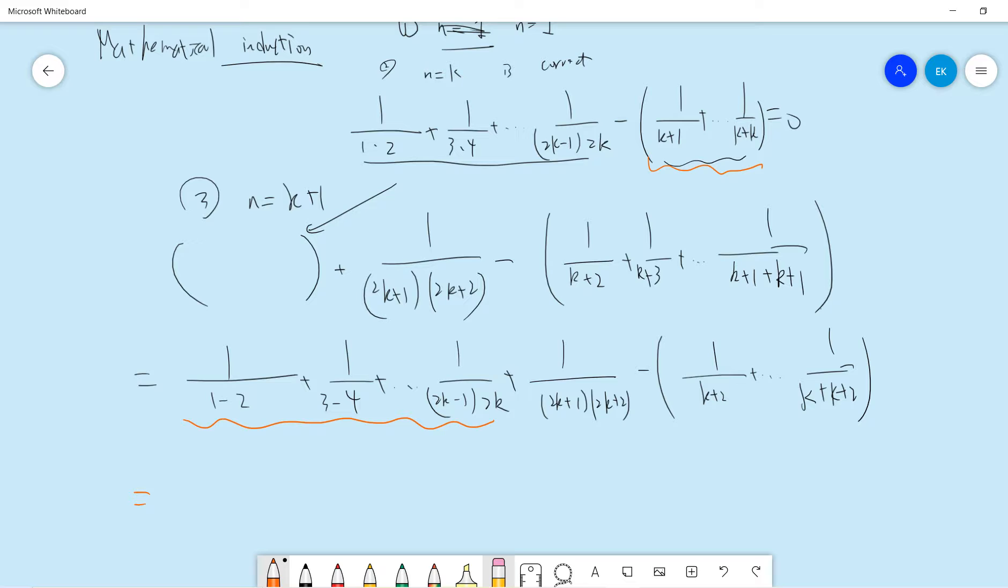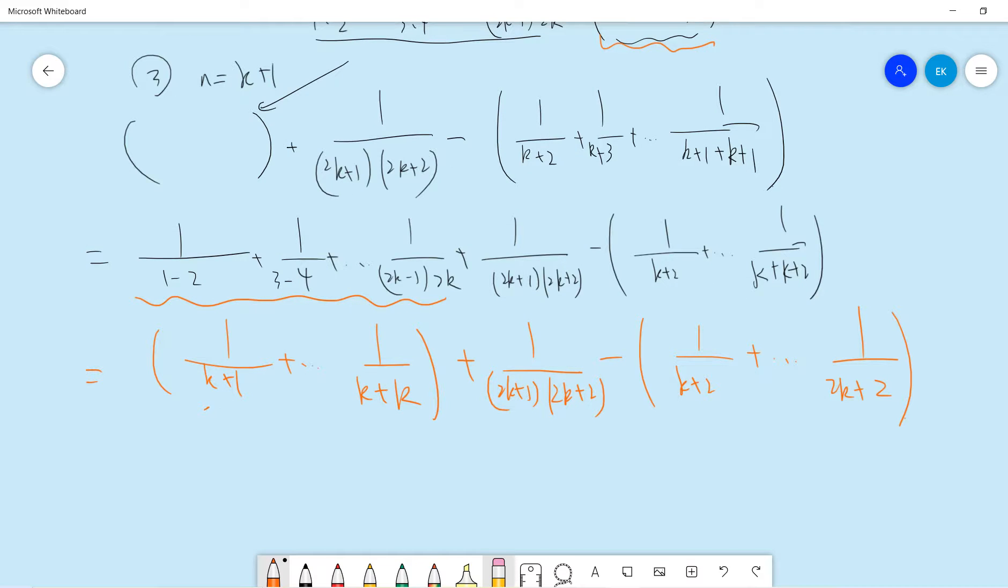So we can change this as 1 over k plus 1 up to 1 over k plus k, plus 1 over 2k plus 1, 2k plus 2, minus 1 over k plus 2 to 2k plus 2, right? So compare these two, this k plus k plus 1 will remain, but k plus 2, k plus 3 will cancel until 2k, right?